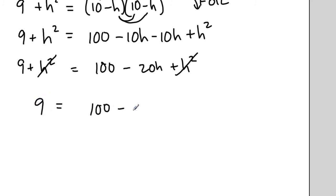This is 100 minus 20h, and all I have to do is get the h term by itself, solve for h. So I'll subtract 100 from both sides to get the h term by itself. This will be a negative 91 on that side. And over here, these terms cancel, and we have a negative 20h left.